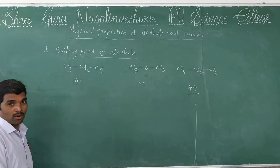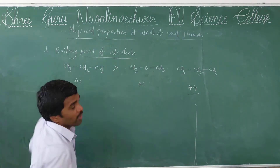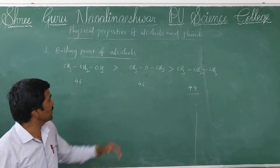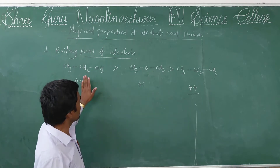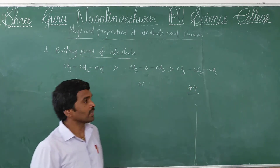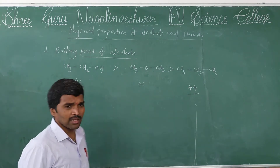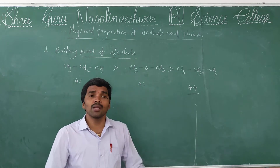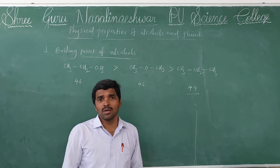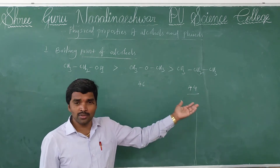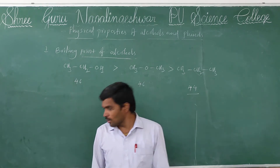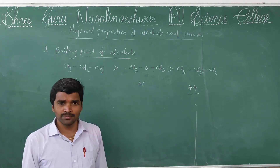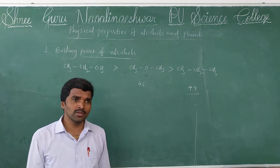If you want to see the order of boiling point: alcohol has the highest boiling point, then ether, and last is alkane. Now, alcohol's boiling point increases by increasing the carbon chain, because as carbon chain increases, molar mass also increases, then boiling point also increases. Phenols also form intermolecular hydrogen bonds, so phenols' boiling point is also higher.